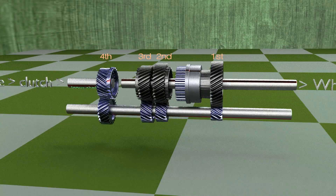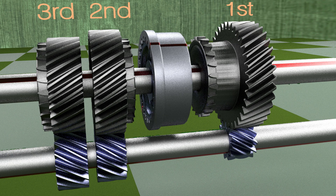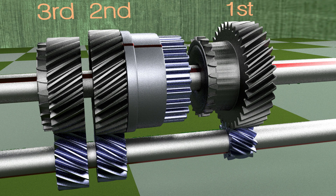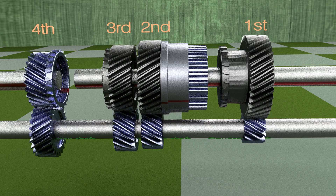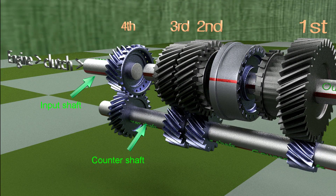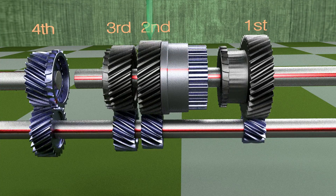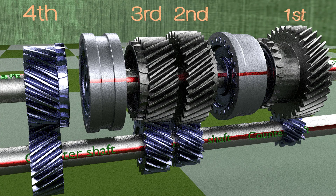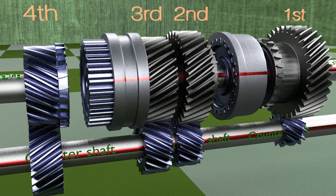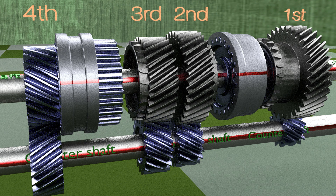Similarly, the sleeve can be slid to engage with the synchro teeth on the side of the second gear, and hence the second gear gets locked to the output shaft through the hub. Now second gear and the output shaft rotate at the same speed, and power is transmitted from the engine to the input shaft, to the counter shaft, and then to the second gear. For locking third and fourth gear on the output shaft, another hub and shift sleeve is provided. Engaging the sleeve to the third gear locks the third gear to the output shaft. For fourth gear, the shift sleeve is directly engaged with the input shaft gear, and power is transmitted directly to the output shaft without any speed reduction — referred to as direct drive.